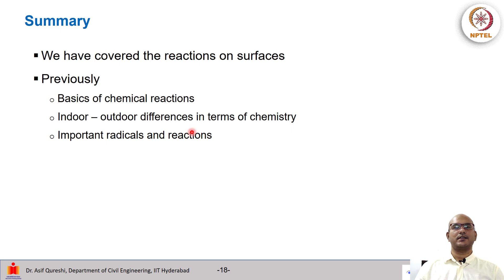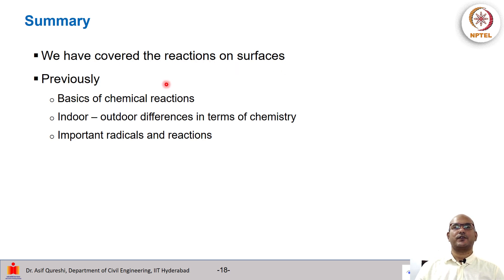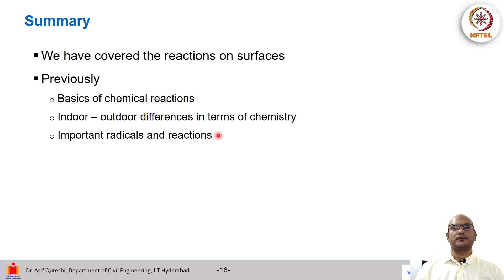To summarize the topics covered this week: in this lecture we covered reactions on surfaces, and previously we covered basics of chemical reactions, outdoor-indoor differences in air chemistry, and important radicals and reactions such as OH radicals, nitrate radicals, and ozone-terpene reactions. With this we conclude the theory for this week.